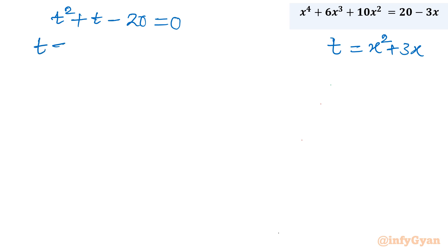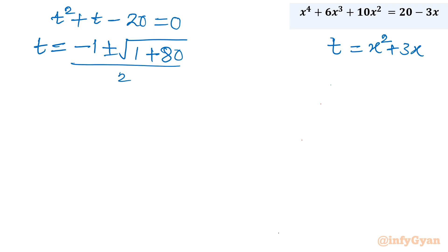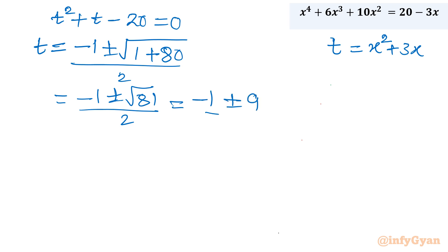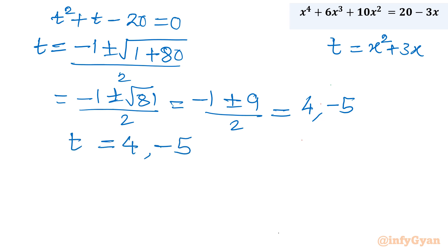Let us apply the quadratic formula quickly. t = (−b ± √(b²−4ac)) / 2a. So t = (−1 ± √(1 + 80)) / 2 = (−1 ± √81) / 2 = (−1 ± 9) / 2. Taking the plus sign: (9−1)/2 = 8/2 = 4. Taking the minus sign: (−1−9)/2 = −10/2 = −5. So there are two values of t: t = 4 and t = −5.